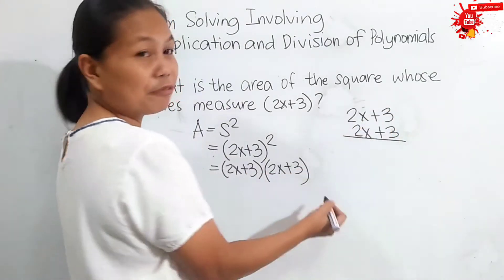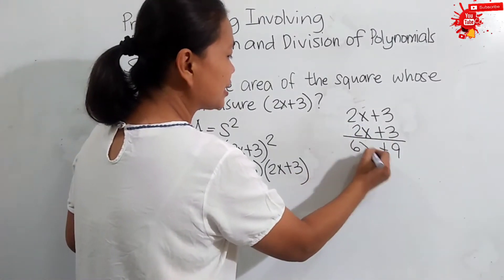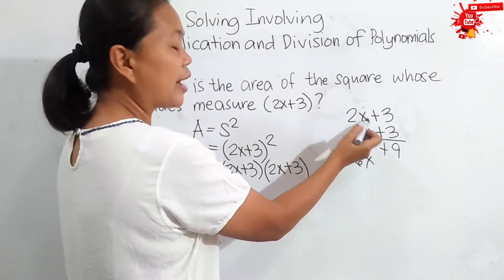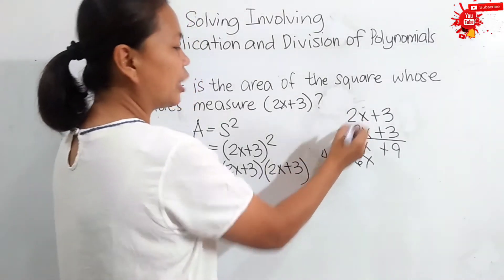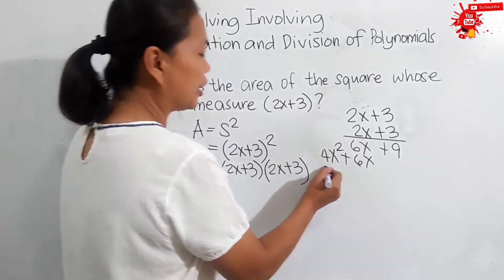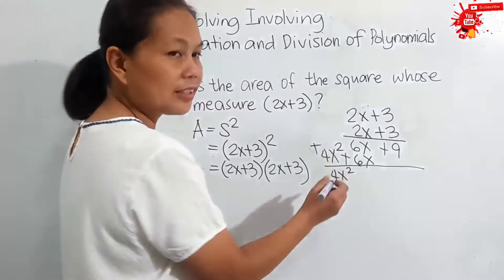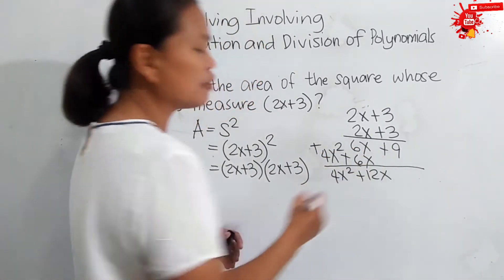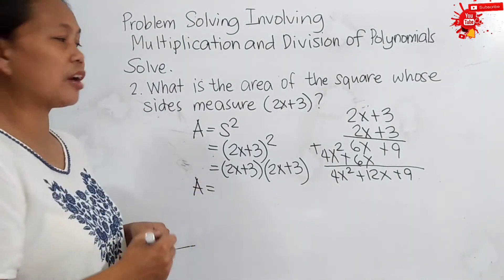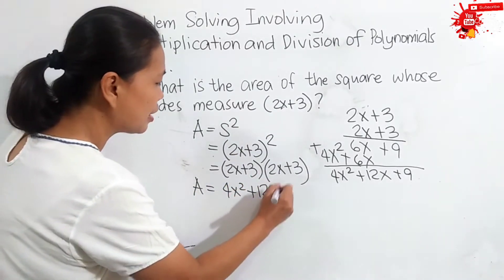Positive 3 times positive 3 is positive 9. Positive 3 times 2x is positive 6x. Positive 2x times positive 3 is positive 6x. Then, 2x times 2x: 2 times 2 is 4, we copy x as the same base, and add the exponents since this is multiplication, giving us 4x squared. We bring down 4x squared. Positive 6 plus positive 6 is positive 12, so we have 12x. Then we bring down 9.